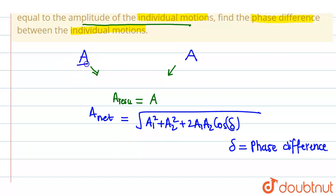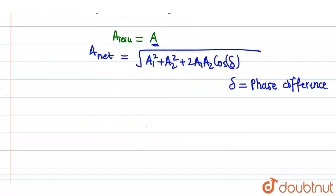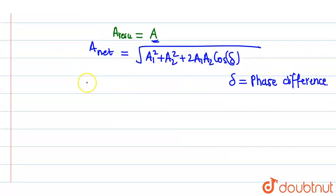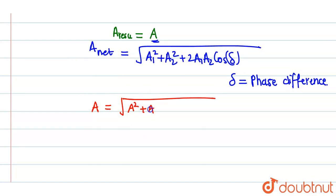When the amplitudes of both individual systems are A and the resultant is also A, putting A_net = A and A1 = A2 = A, we get: A = √(A² + A² + 2·A·A·cosδ).